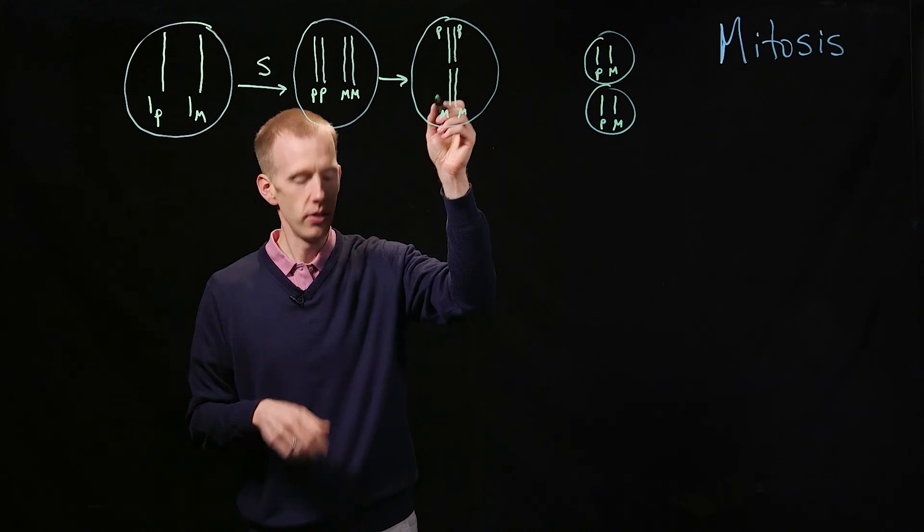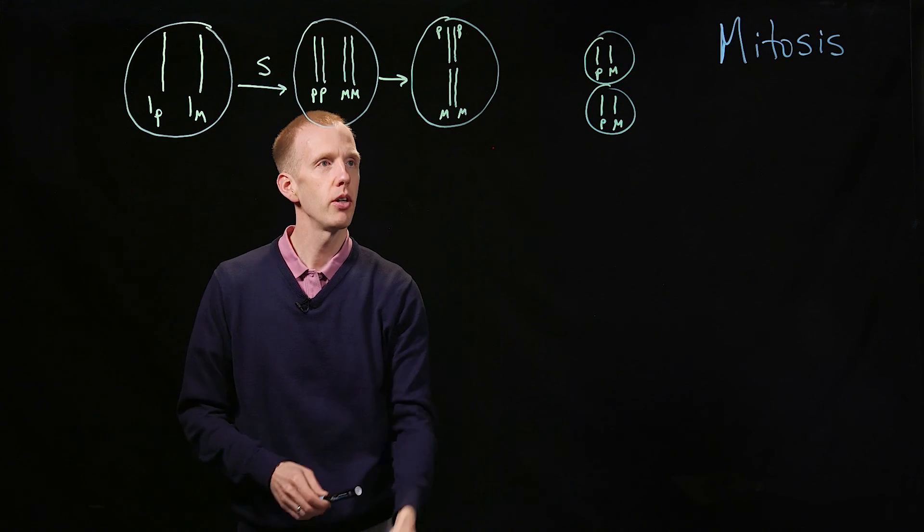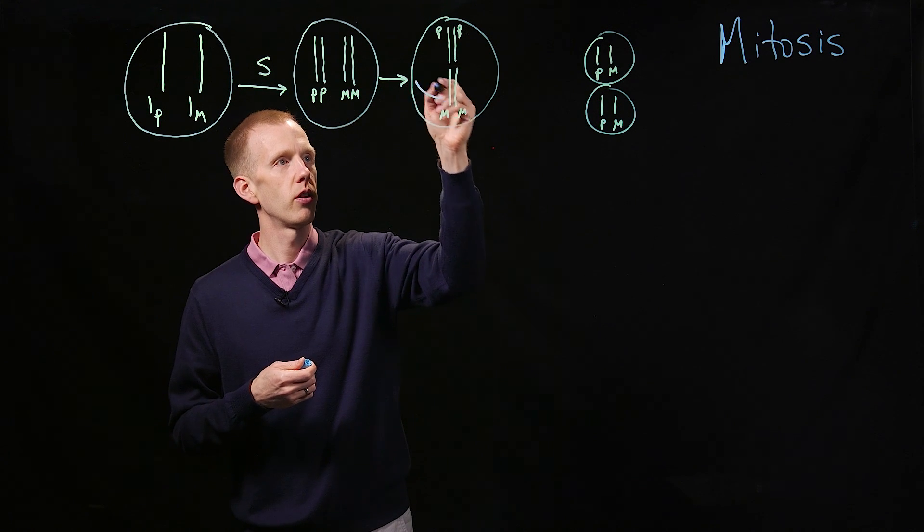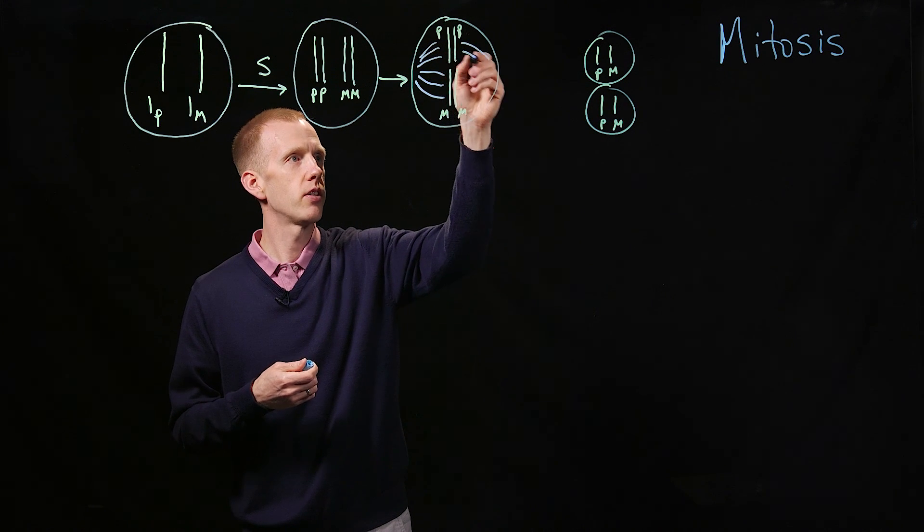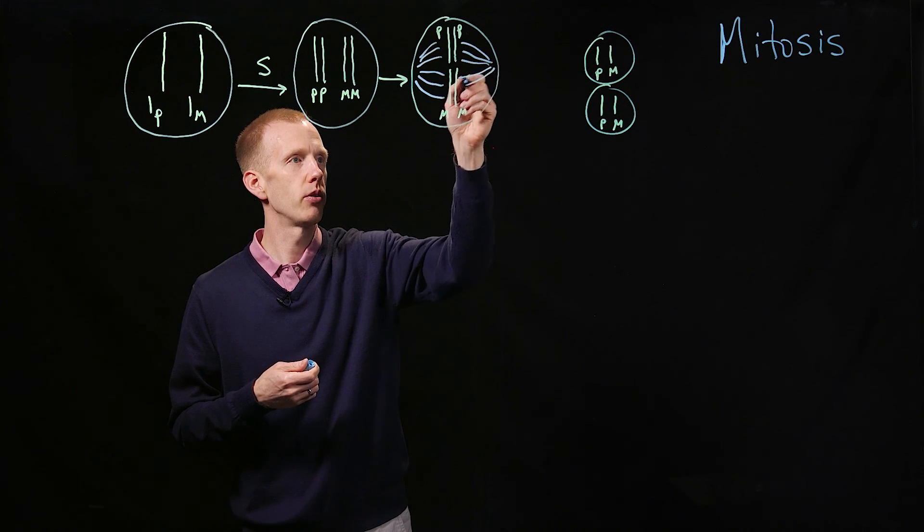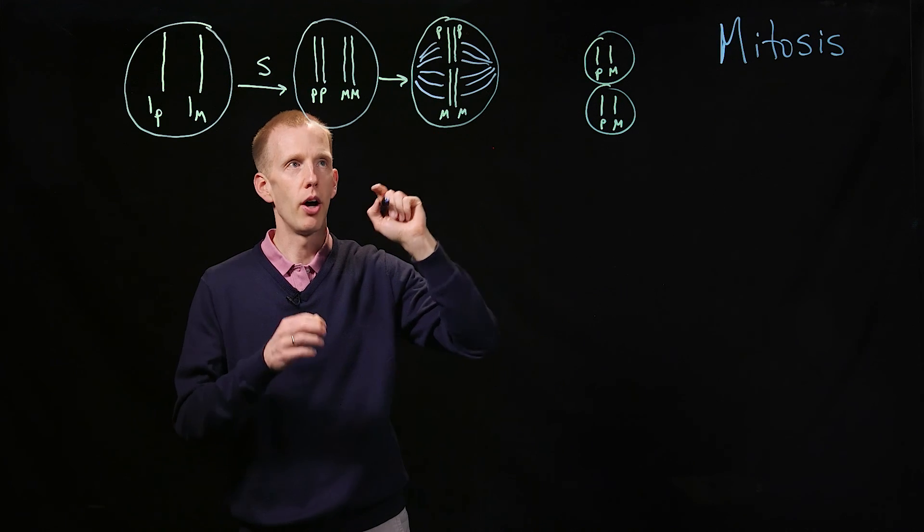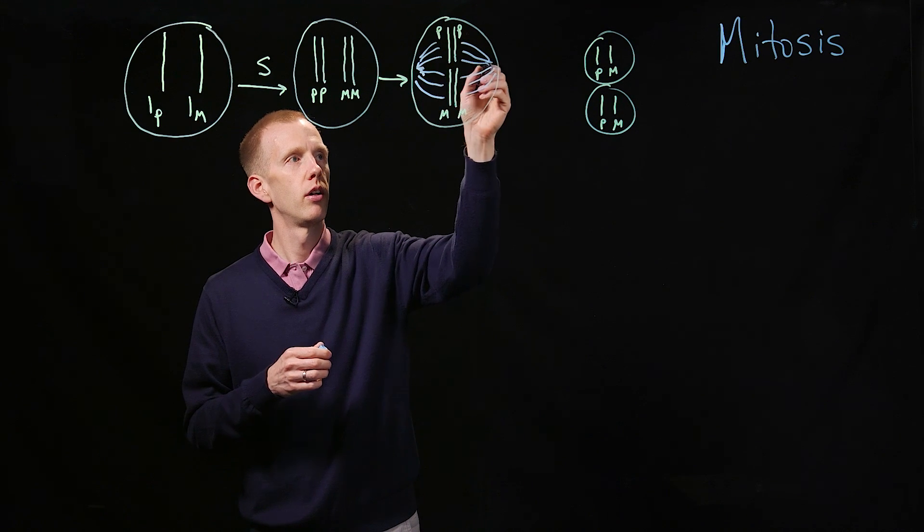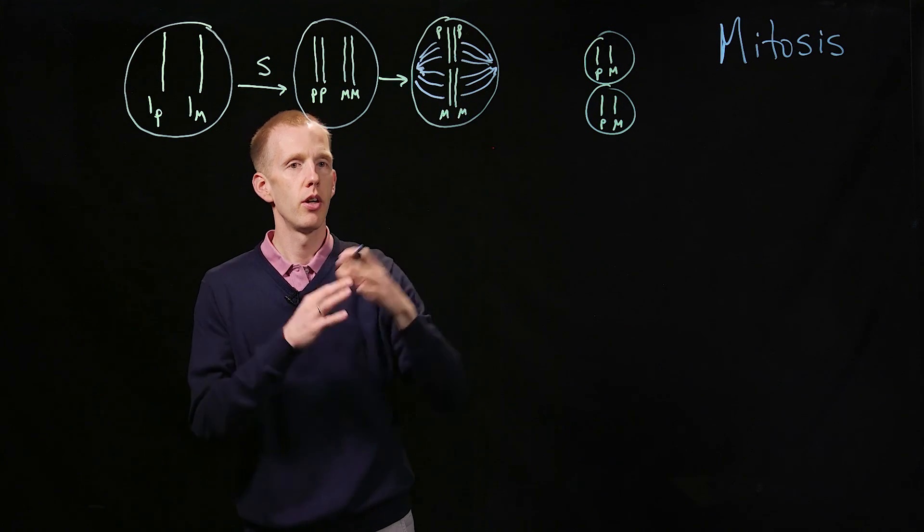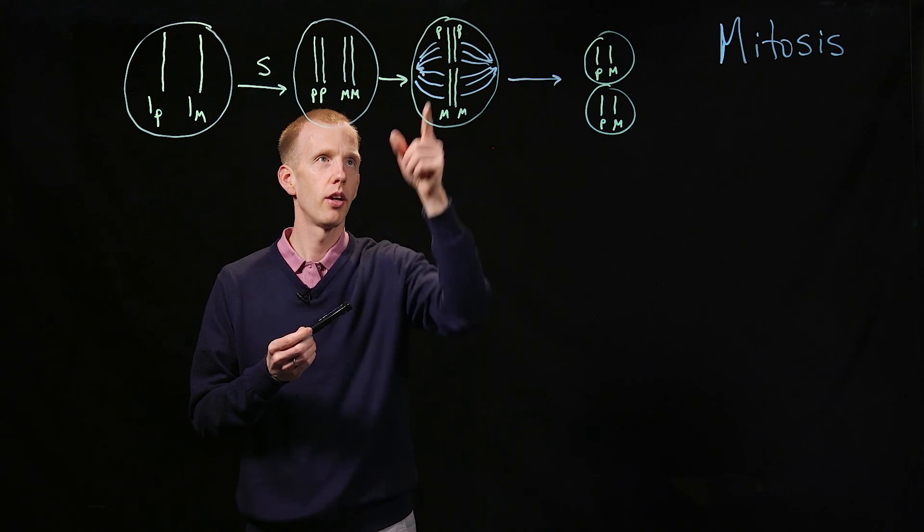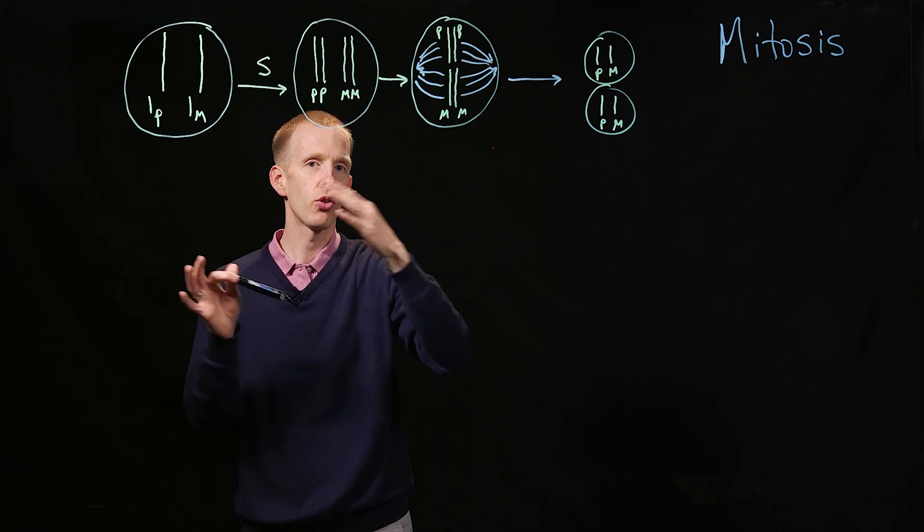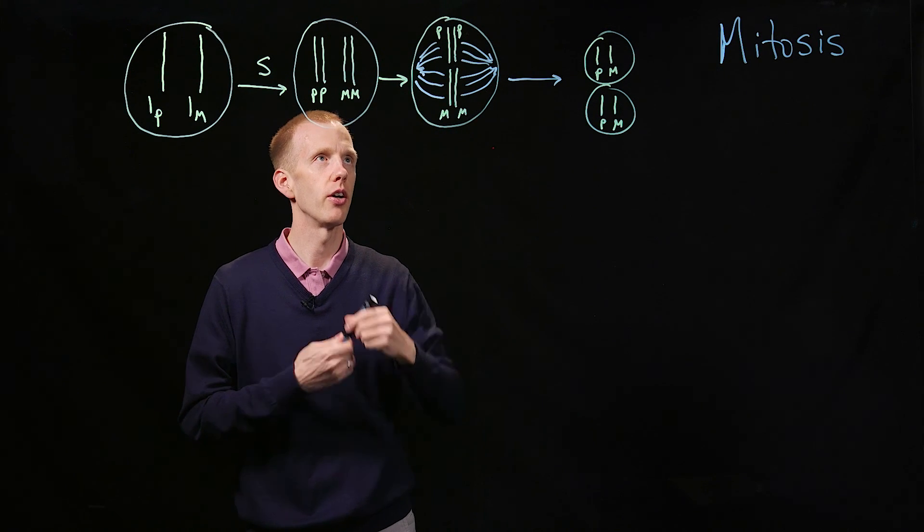And then what happens is we have spindles that attach from the sides of the cells, the microfibers, microtubules, that grab on and pull those chromosomes to the sides. And that's how we get one paternal and one maternal copy of each chromosome into the two resulting daughter cells.